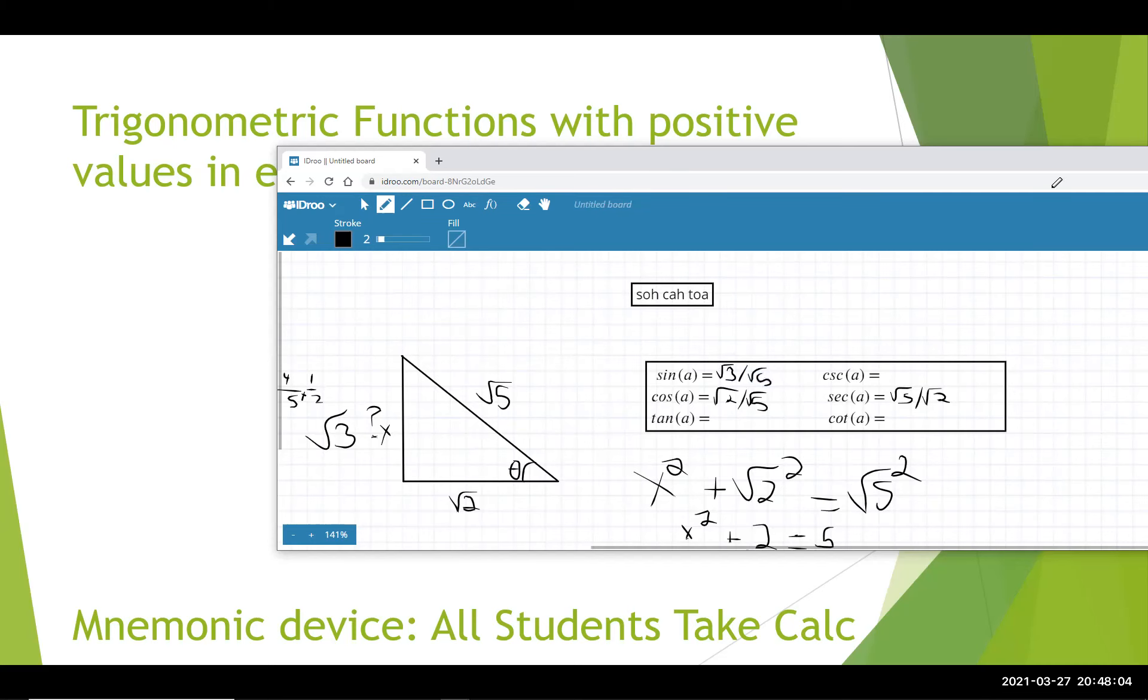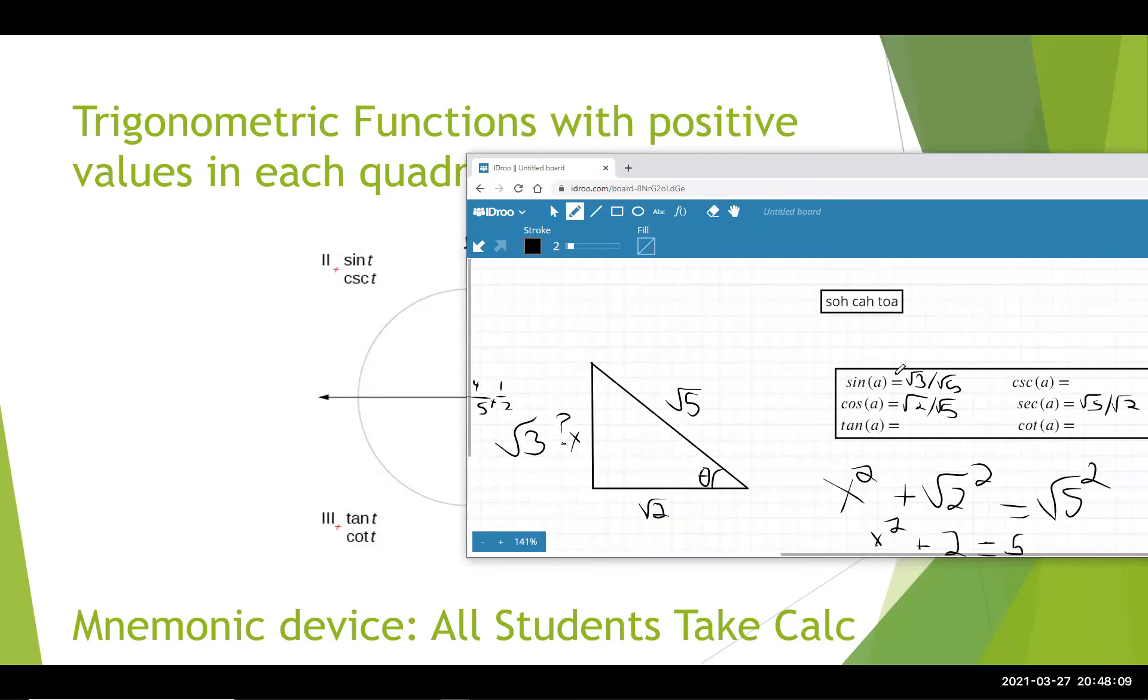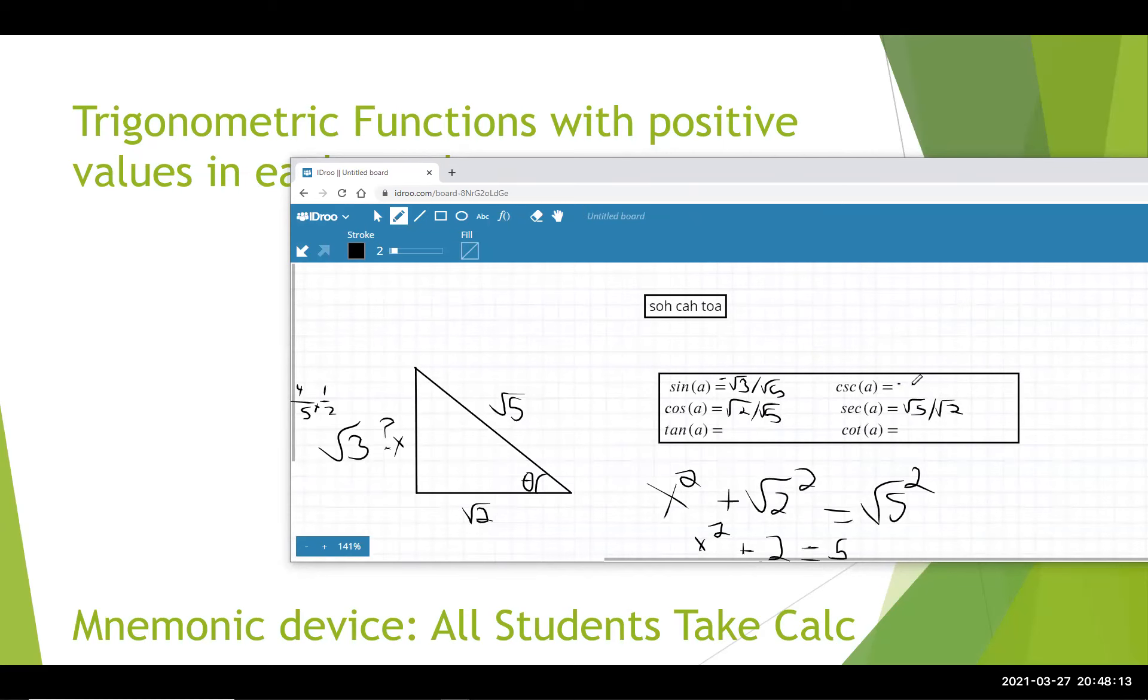But I need to look at that diagram again. We're in the fourth quadrant. The only thing that's positive is cosine and secant, so that means that this is going to be negative. And we're going to fill in the reciprocal by flipping it.